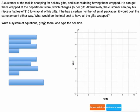All right, next up, a customer at the mall is shopping for holiday gifts. And it is considering having them wrapped. He can get them wrapped at the department store. They charge $5 per gift. Alternatively, the customer can pay his niece a flat rate of $15 to wrap all his gifts. You see, if he has a certain number of small packages, it would cost the same amount either way. So what would the total cost be to have all of them wrapped? Well, it's the same either way, and his niece will do them for $15. I mean, the cost is going to be $15. But at any rate, we have to graph these two.